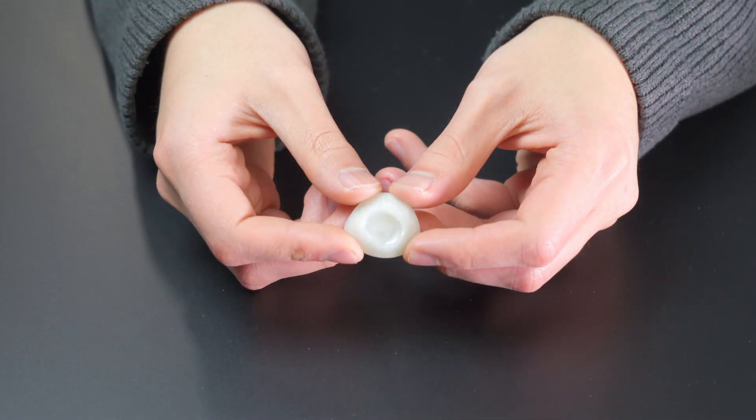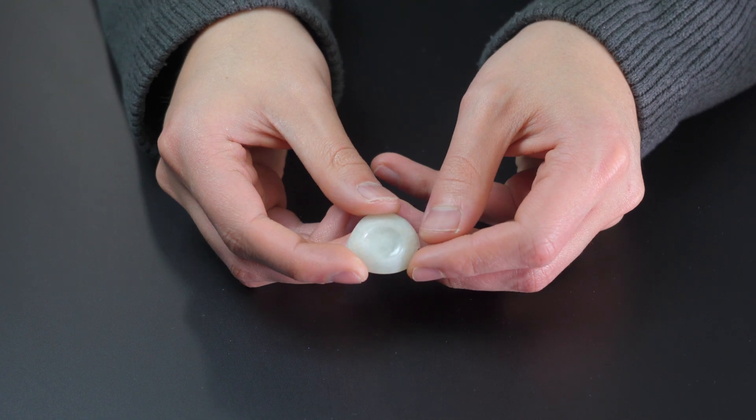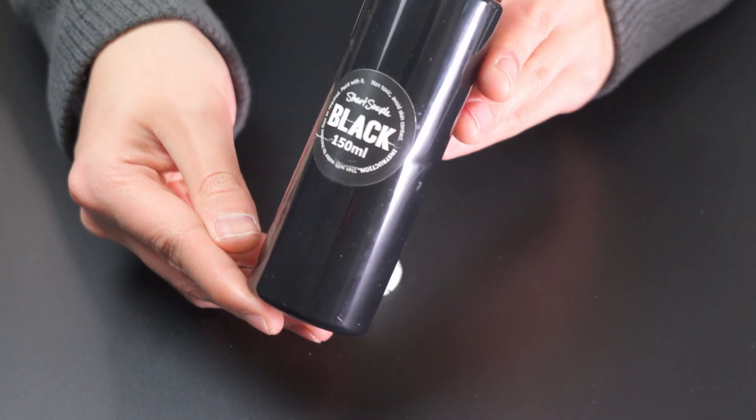So after it sets and you demold it, it looks something like this. Now we can start making the pupil. So the first thing I'm going to do is to paint a base layer and I'm using black 2.0.